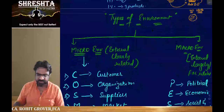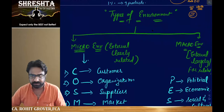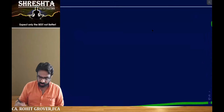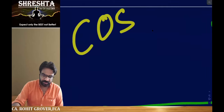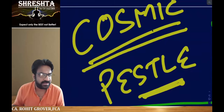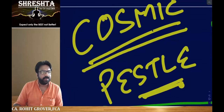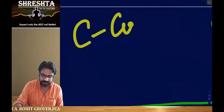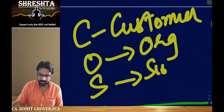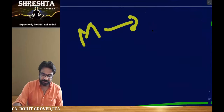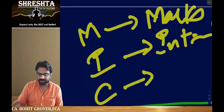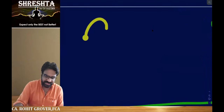Whenever we talk about types, two things come to mind: one is micro environment and one is macro environment. Micro stands for COSMIC and macro stands for VESSEL. In COSMIC: C stands for customer, O stands for organization, S stands for suppliers, M stands for market, I stands for intermediaries, and C stands for competitors.